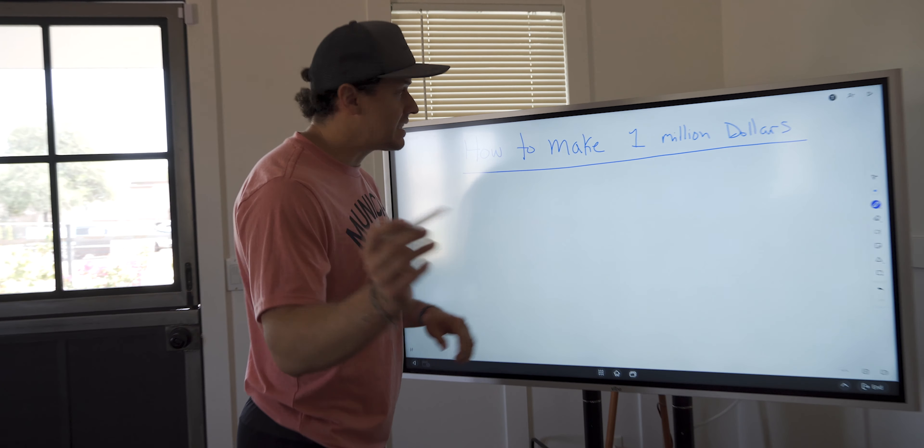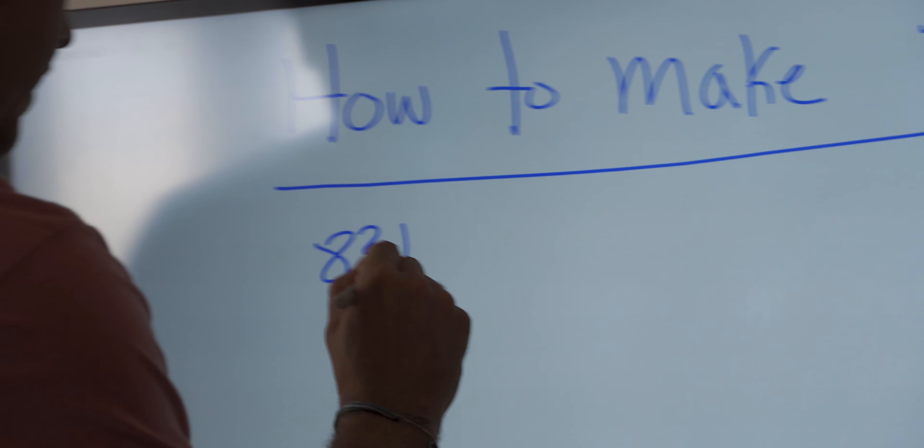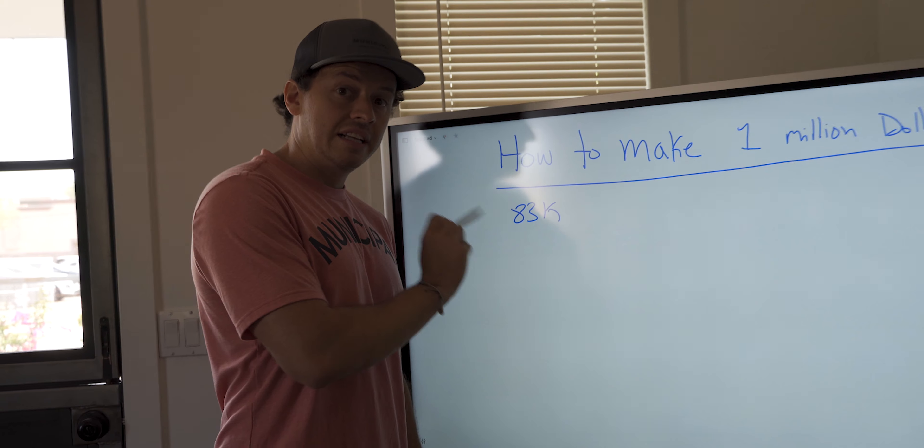So on a monthly basis, to make a million dollars you guys, you need to make $83,333 a month. So for this example, let's just go ahead and say 83K is what you're going to need to make every month.